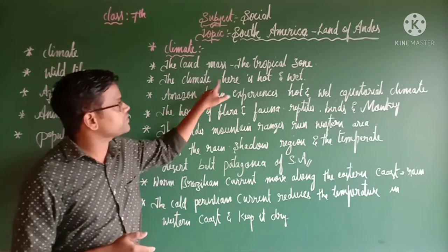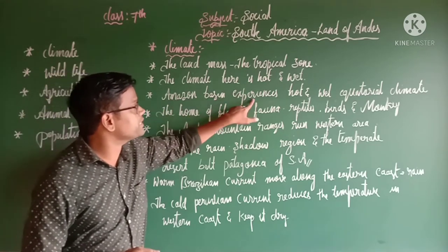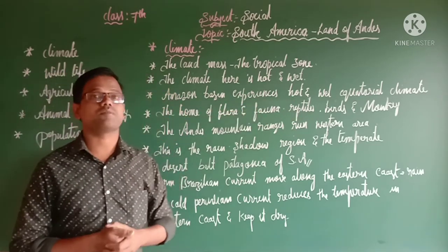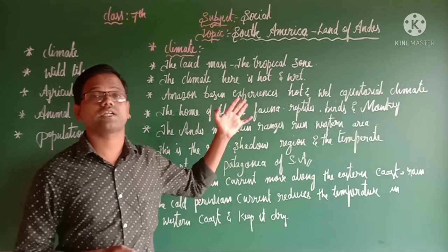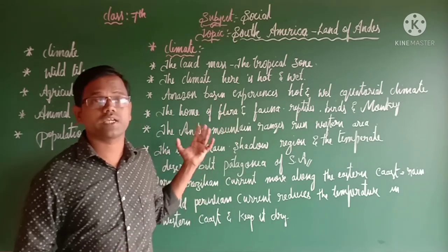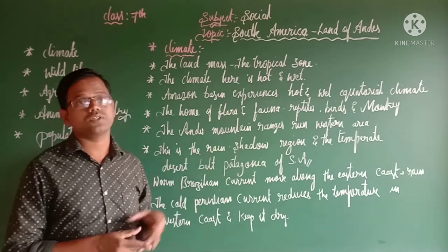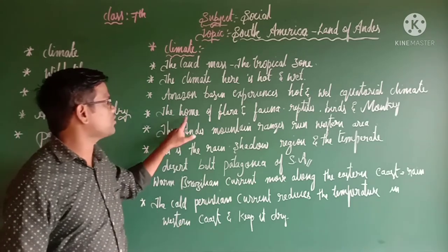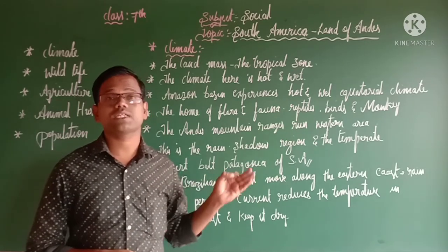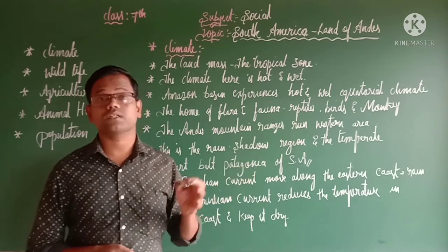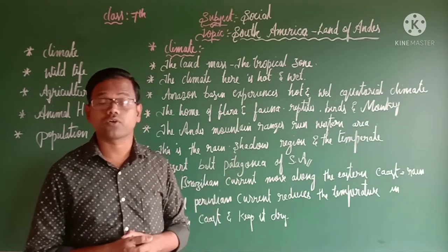The Amazon basin experiences a hot and wet equatorial climate because of the equator line. This region experiences convectional rainfall almost every day, resulting in heavy rainfall, which is why we see the Amazon forest. The Amazon forest is considered a home of flora and fauna, raptors, birds, and monkeys. The convectional rainfall in the equatorial region is called afternoon rainfall, tea-time rainfall, or 4 o'clock rainfall.